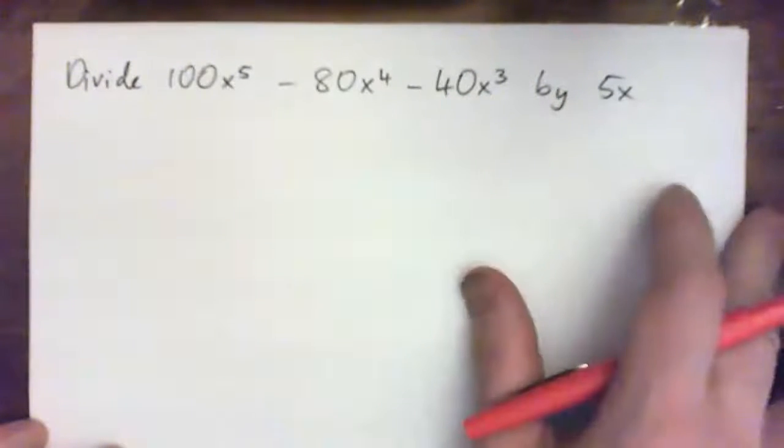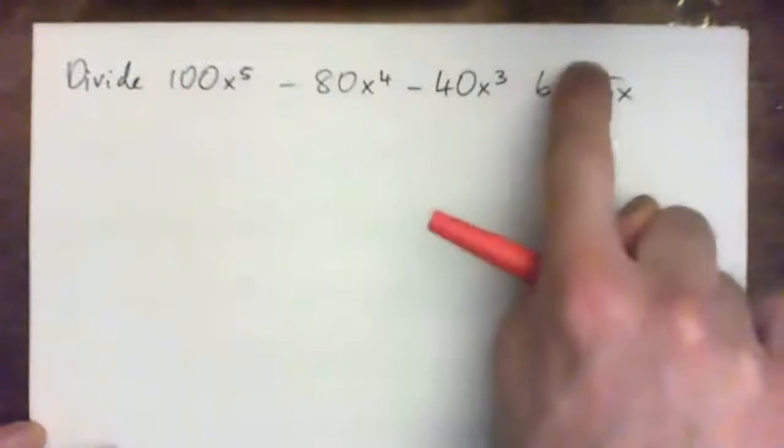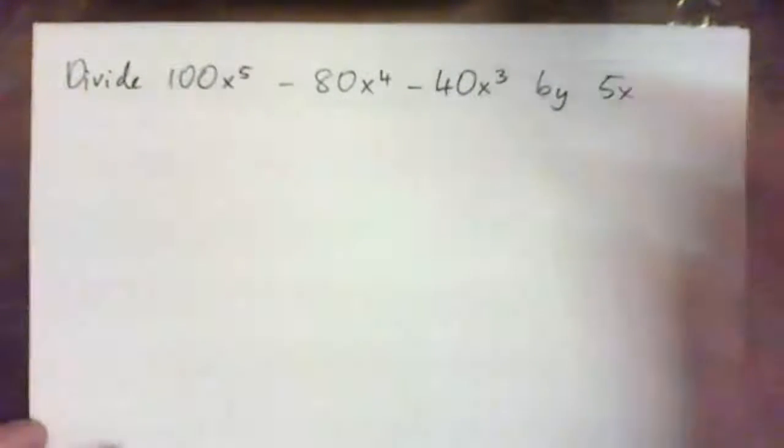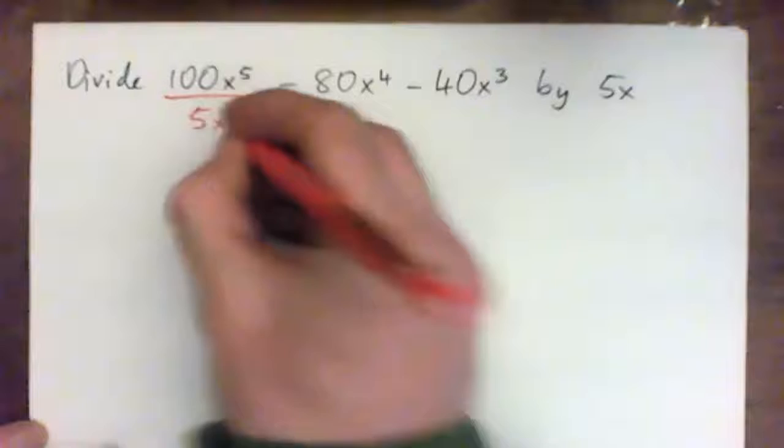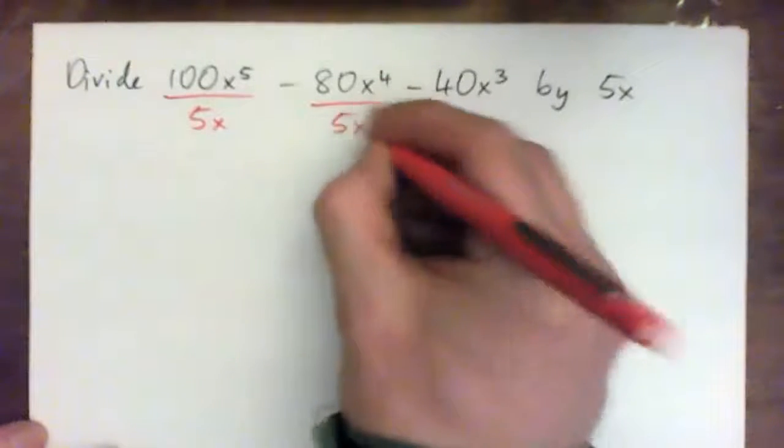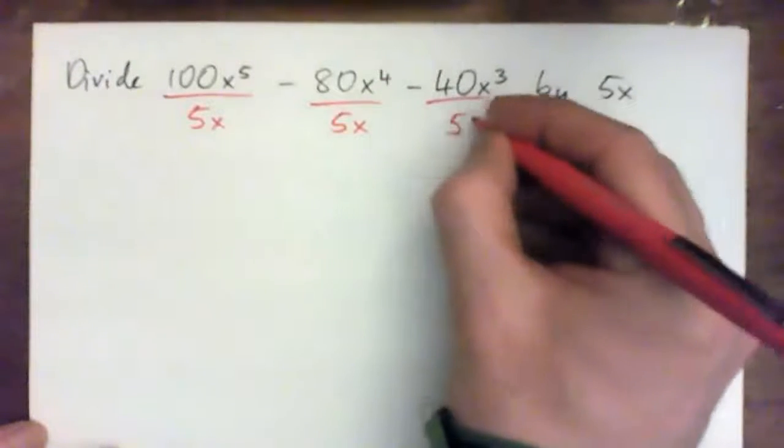So as we've talked about a lot, that means you divide the whole thing by 5x, which is same as dividing each individual term by 5x. So we divide each individual term by that.